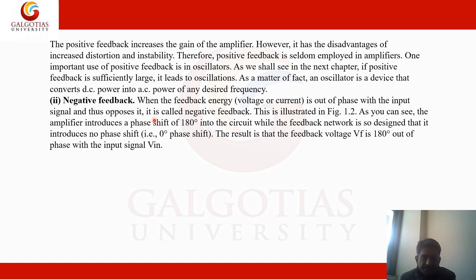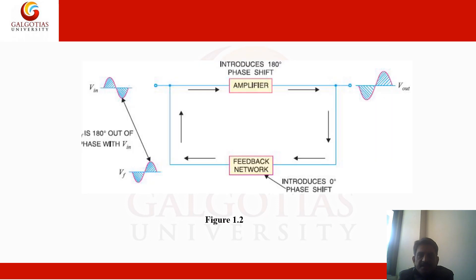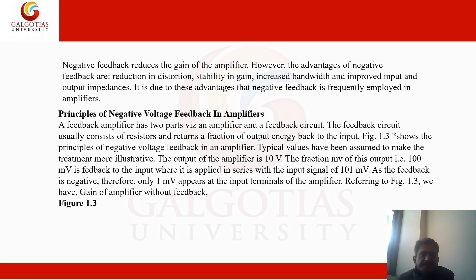In negative feedback, when the feedback energy or voltage is out of phase with the input signal and thus opposes it, it is called negative feedback. The amplifier introduces a phase shift of 180 degrees into the circuit, while the feedback network is designed to introduce zero phase shift. The result is that the feedback voltage Vf is 180 degrees out of phase with the input signal. In the case of negative feedback, the gain of the amplifier is reduced.